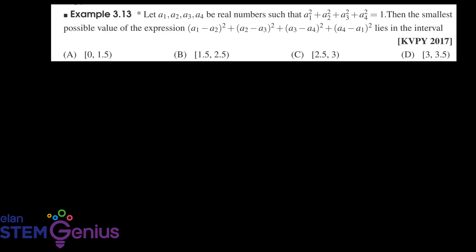Example 3.13: Let a1, a2, a3, a4 be real numbers such that a1 squared plus a2 squared plus a3 squared plus a4 squared equals 1. Then the smallest possible value of the expression (a1 minus a2) squared plus (a2 minus a3) squared plus (a3 minus a4) squared plus (a4 minus a1) squared lies in the interval.